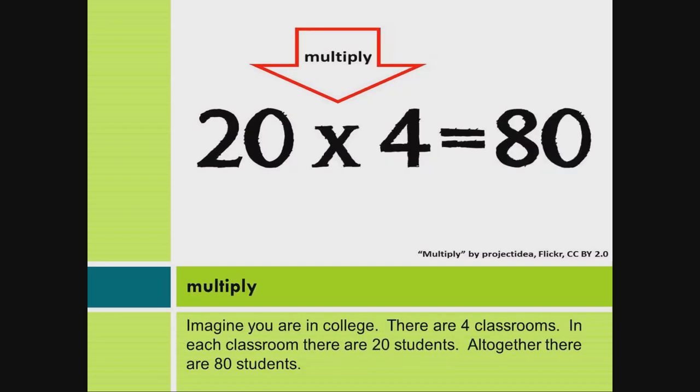Multiply. Imagine you are in college. There are four classrooms. In each classroom, there are 20 students. All together, there are 80 students.